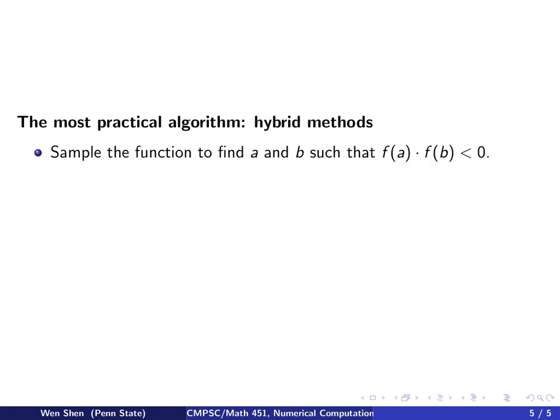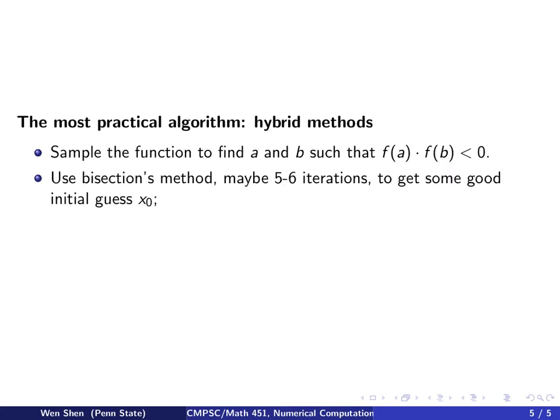So you would sample your function f through some sampling process to find a value a and b, such that f has opposite sign on a and b. Then you know for sure on the interval between a and b, there will be a root.